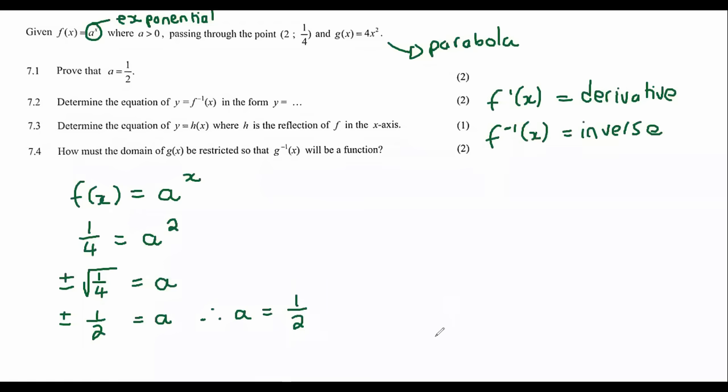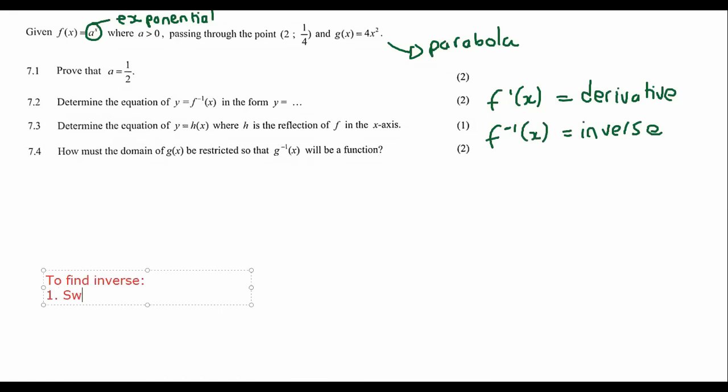So, to find the inverse of an equation, remember, this is where we do our two-step process. Step one, switch x and y around. Step two, get y alone. So if they want us to find the inverse, what I do first is I write out the original equation using y. So I say y equals a half to the power of x. That's the original.